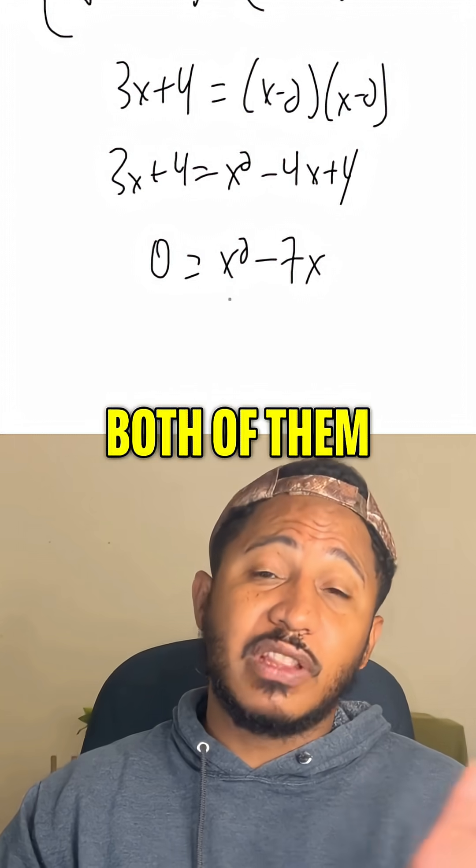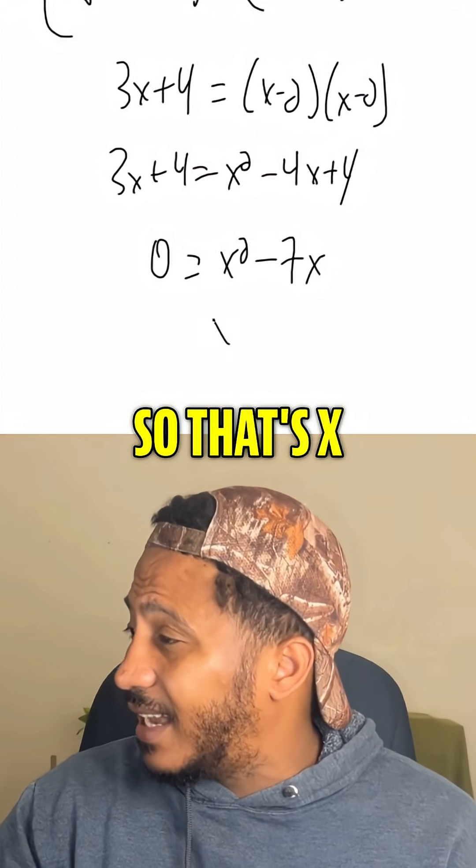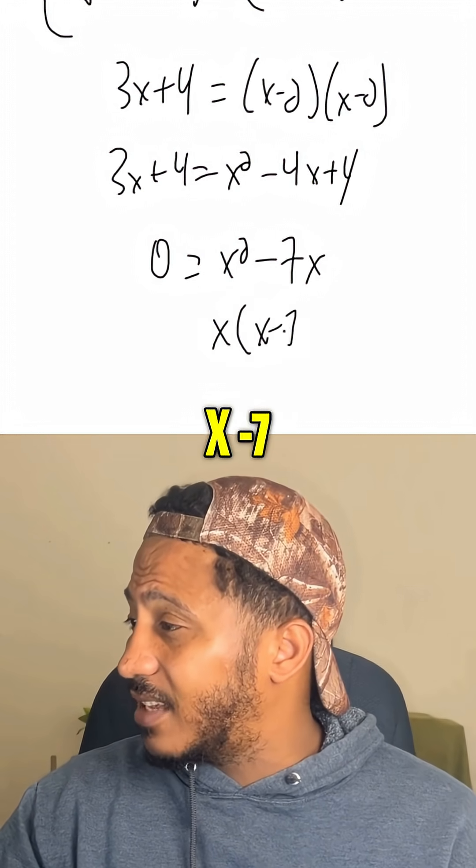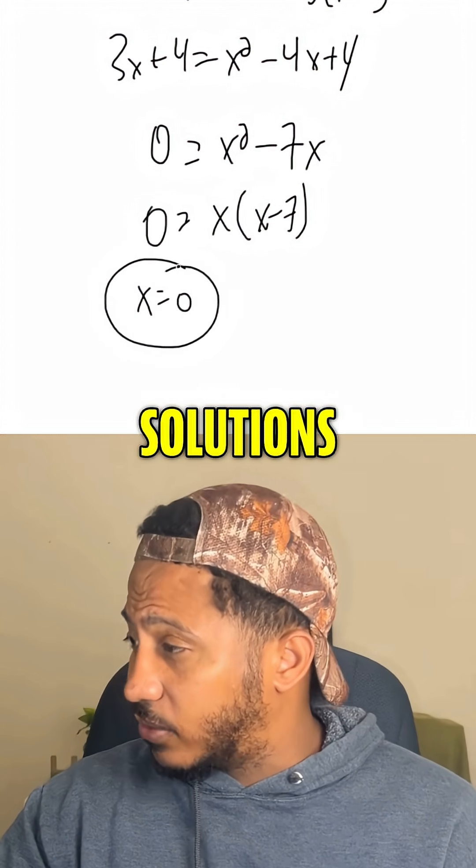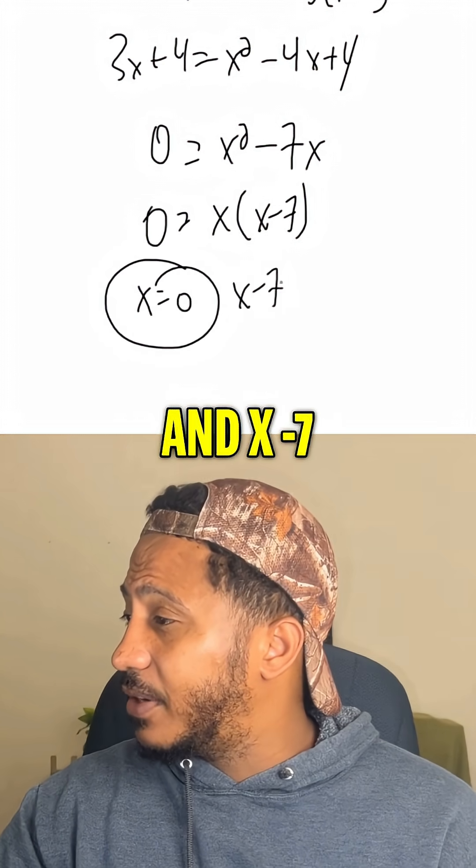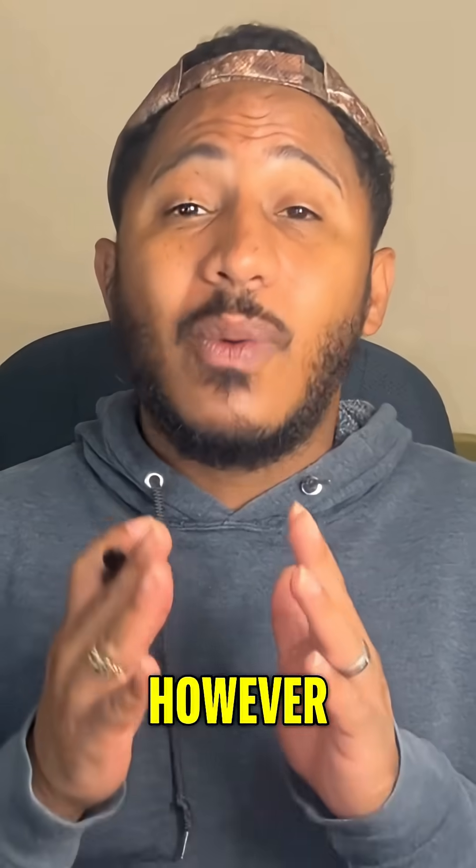Now we factor the other side, both of them have an x in common, so taking an x off of each, that's x times x minus 7. So x equals 0, there's one of our solutions, and x minus 7 equals 0. And that would be our two solutions to the equation.